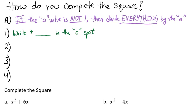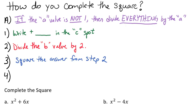Then you're going to write a plus, leave a space in the c's spot. Write that, then divide the b value by 2, then square the answer from step 2, and then write the answer from step 3 in the c's place.